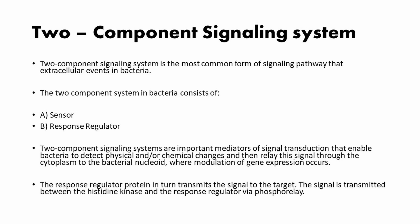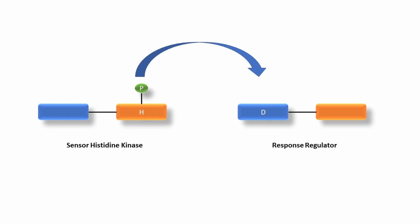The sensor histidine kinase is located in the membrane and it can be activated by binding a ligand in the extracellular medium. The activation causes the kinase to autophosphorylate, transferring phosphate from ATP onto the histidine residue in the kinase domain. The sensor interacts with effector proteins — the response regulator — which has two domains: the conserved receiver domain and the effector domain. The receiver domain catalyzes the transfer of the phosphate group from histidine on the sensor to an aspartic acid residue in its own domain.